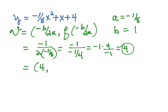To find the y-coordinate of our vertex, we're going to plug 4 back into the original equation. y will equal negative one-eighth of 4 squared plus 4 plus 4. So 4 squared is 16.